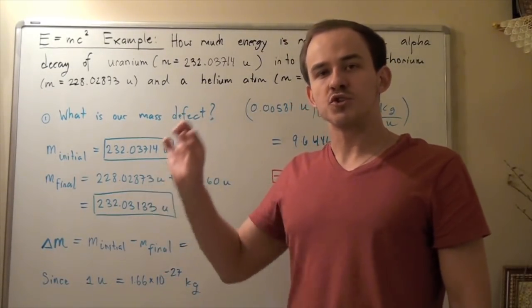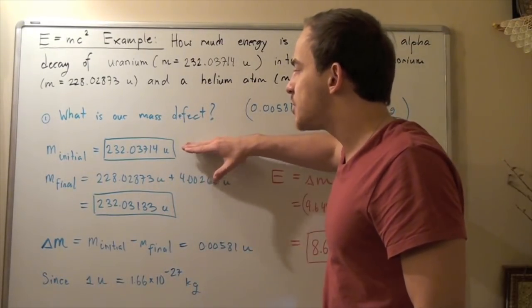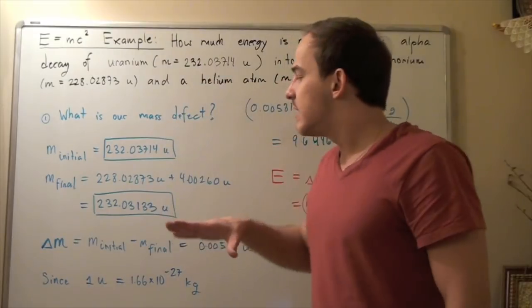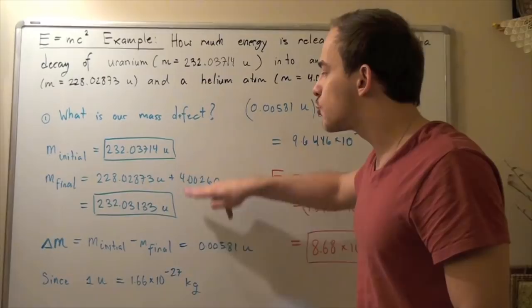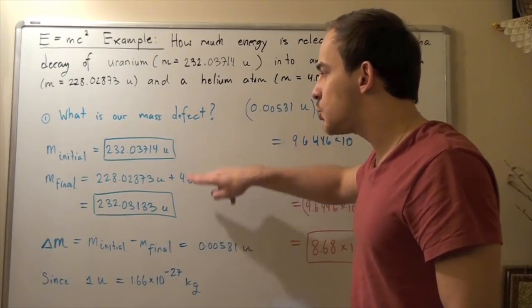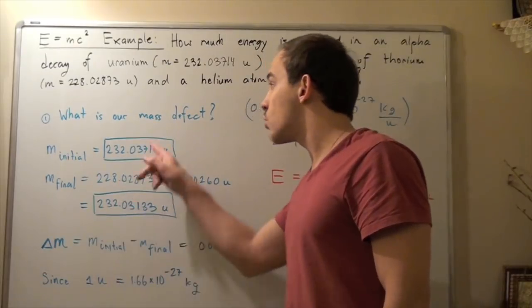Now, because some of the energy was released, some mass was converted, that means our initial mass should be higher than the final mass of our system. And that's exactly what we see. We see a discrepancy between our initial and final system. There's a discrepancy or a mass defect.